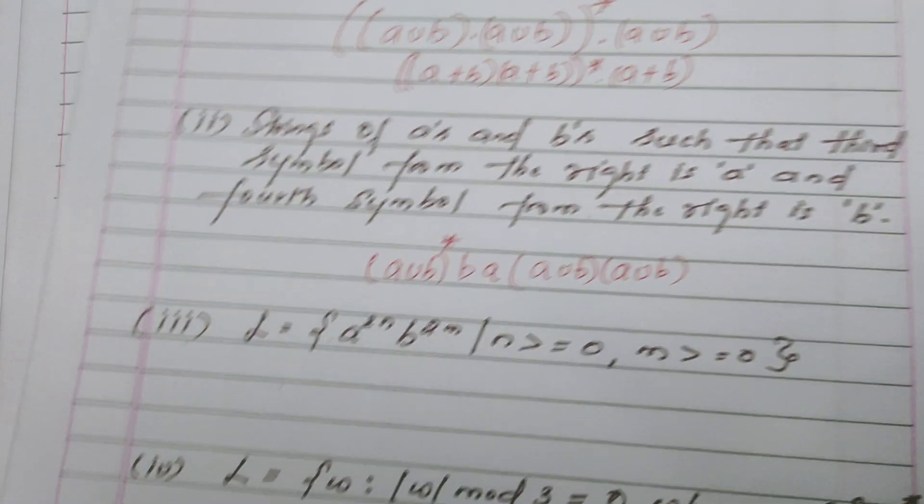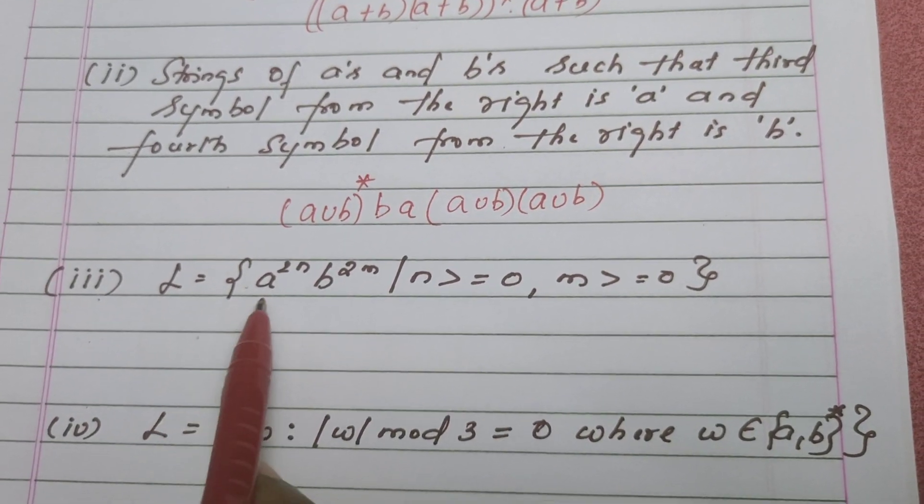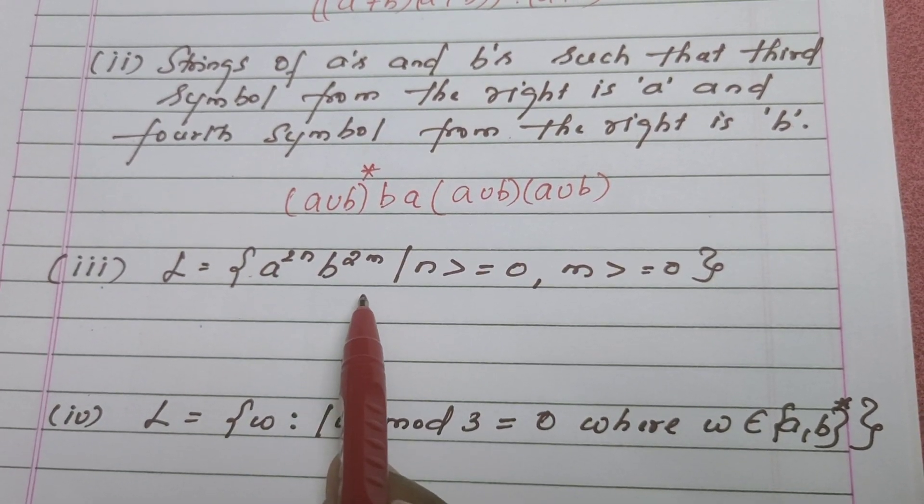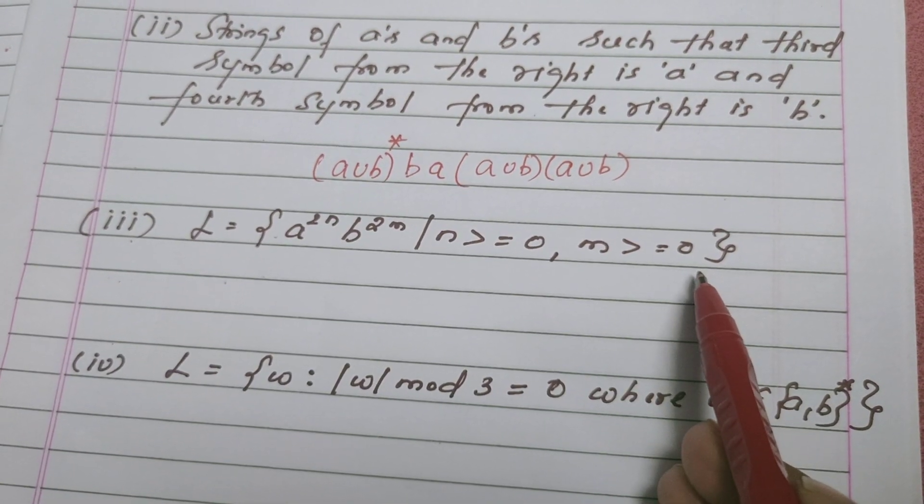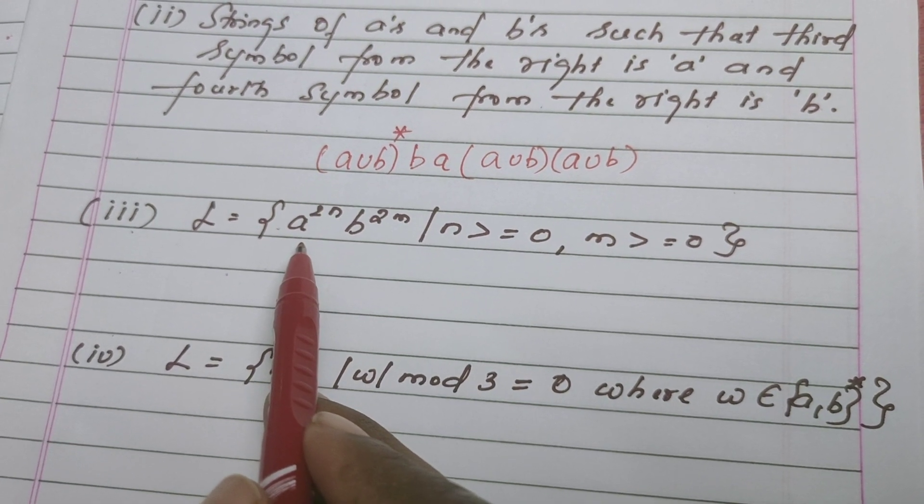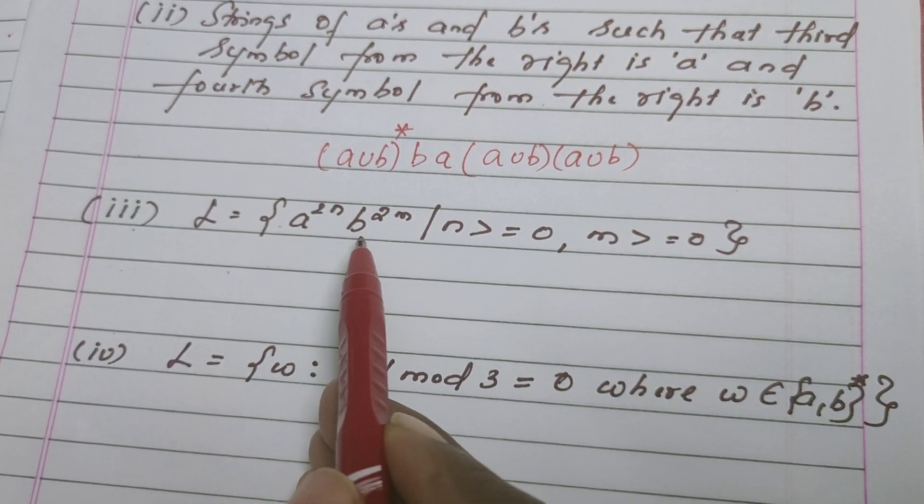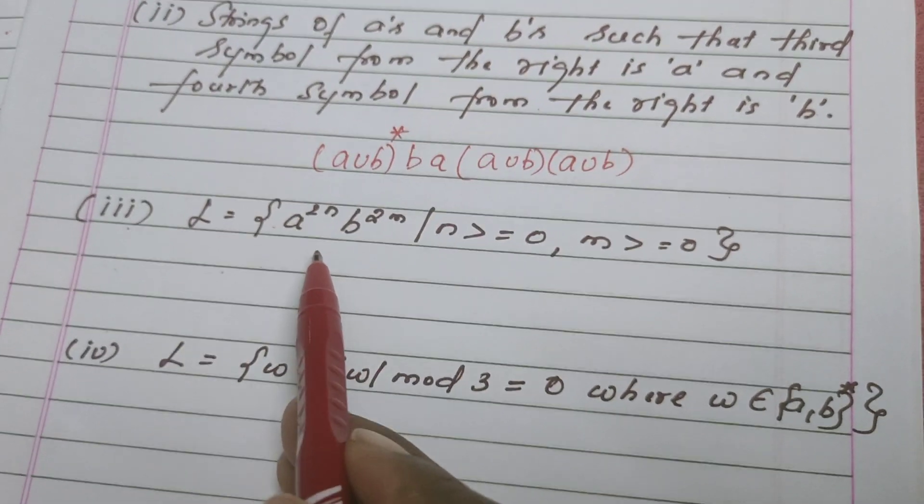That's all, this is a regular expression for this problem. Let's move on to the next question. L is equal to A power 2N, B power 2M, such that N is greater than or equal to 0, M is greater than or equal to 0. So it is nothing but the pattern says that sequence of A's followed by sequence of B's.